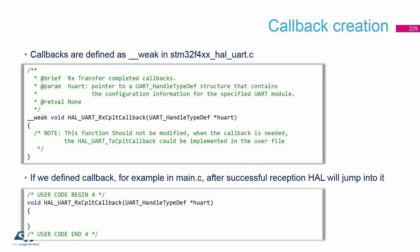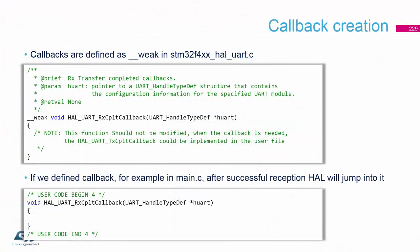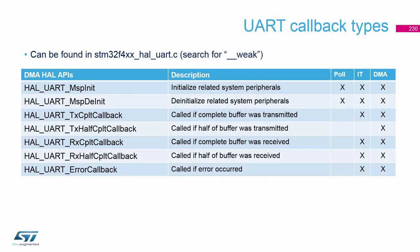We know how to search for the callbacks — they are in UART.c, in the related peripheral file, and defined as weak. Here is only a summary of the UART callbacks. We have the standard MSP init and the init used with CubeMX.